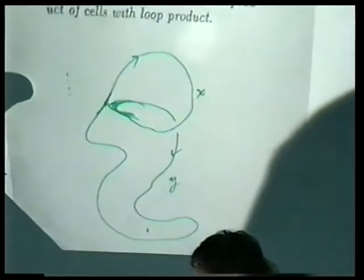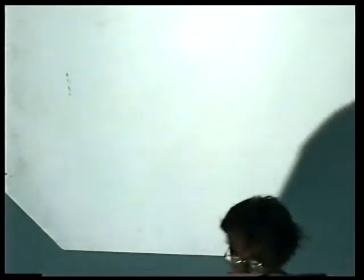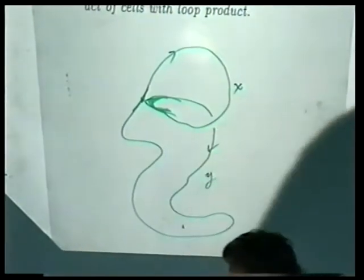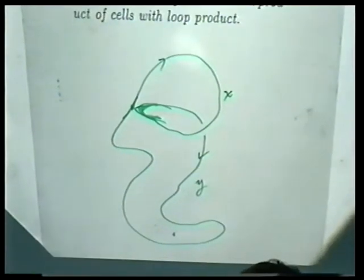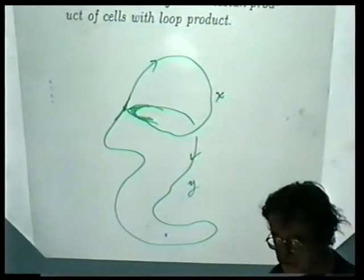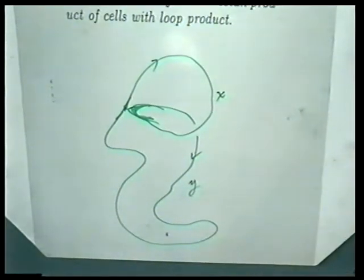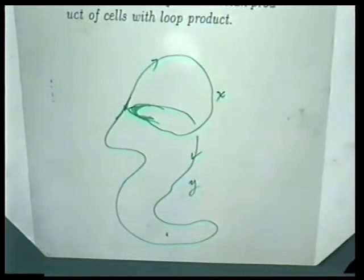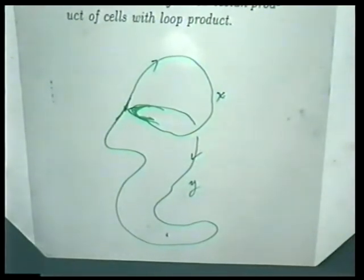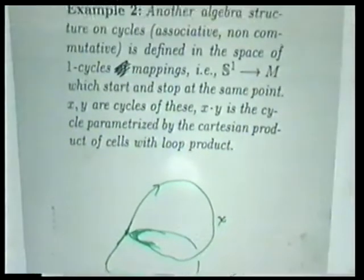There's a second example, which is rather different, of where the homology cycles of a space have an algebra structure. This is associative non-commutative. The previous intersection product on cycles gives a graded commutative algebra structure on the homology of a manifold.